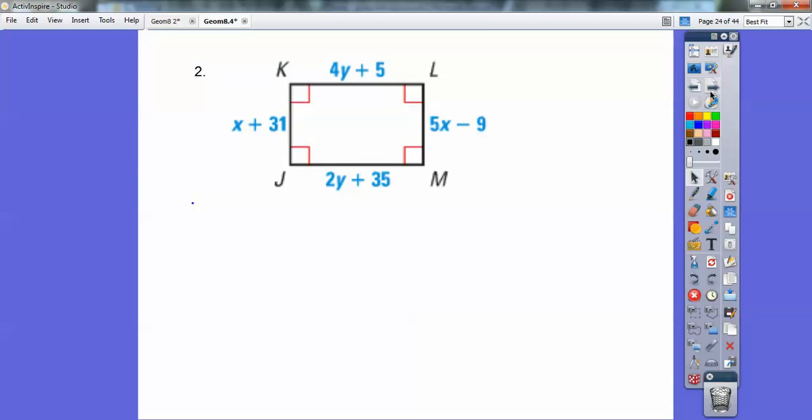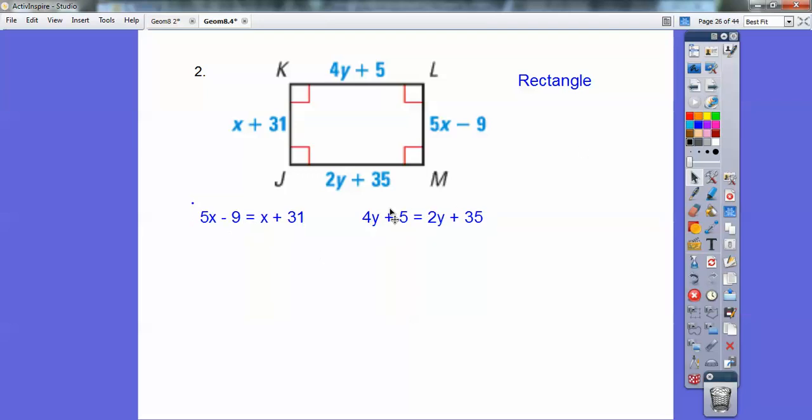Alright, here this is a rectangle happening. So rectangles. So what I'm going to do is set this side equal to this side and top equal to the bottom here. So I have that right there. So I'm going to go ahead and subtract x on both sides on this guy. Whoops, I went a little bit too far. Let me take that back.